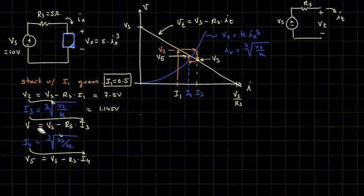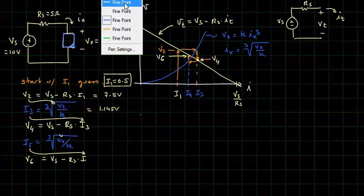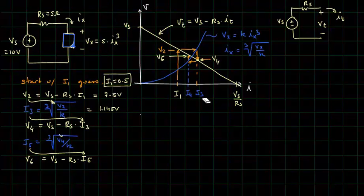I'm sorry, I realized I just skipped a variable. This should have been V4, and I5, and V6. So this is actually I3 and I5, V2, V4, V6.